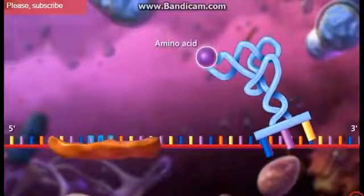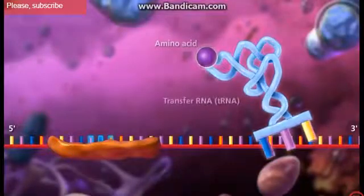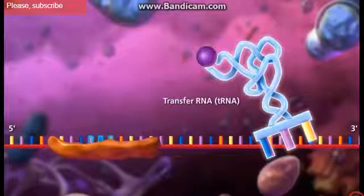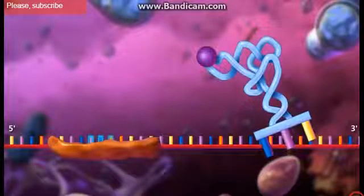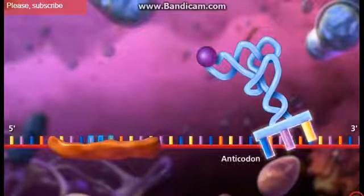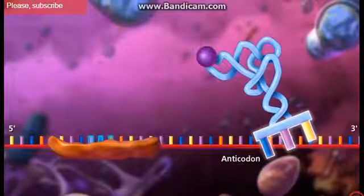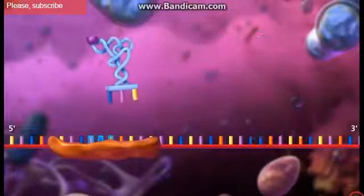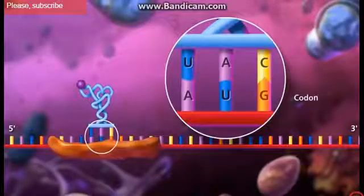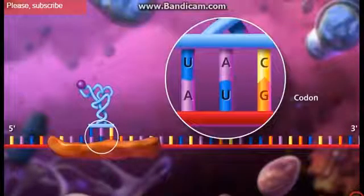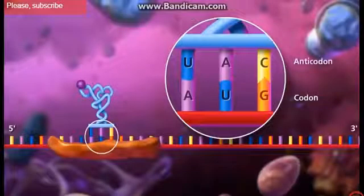Each amino acid is brought to the ribosome by a specific transfer RNA molecule. The type of amino acid is determined by the anticodon sequence of the transfer RNA. Complementary base pairing occurs between the codon of the messenger RNA and the anticodon of the transfer RNA.